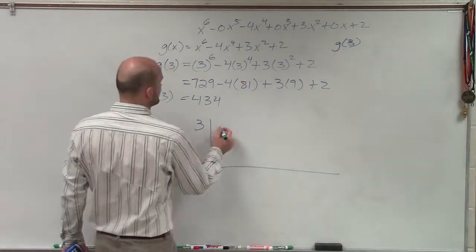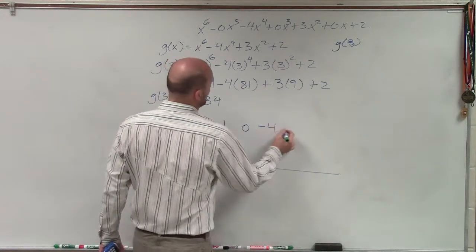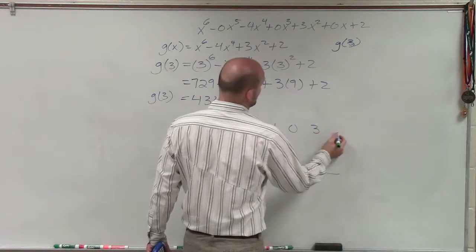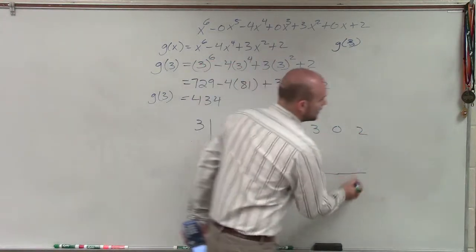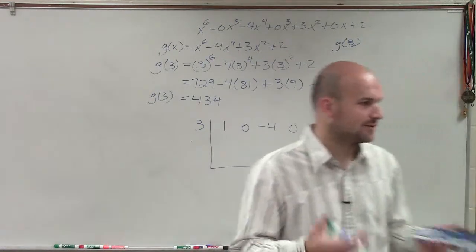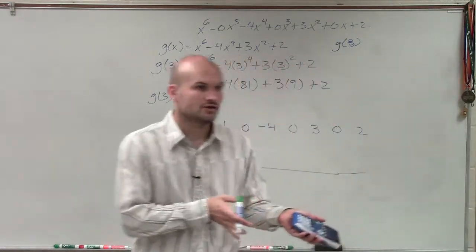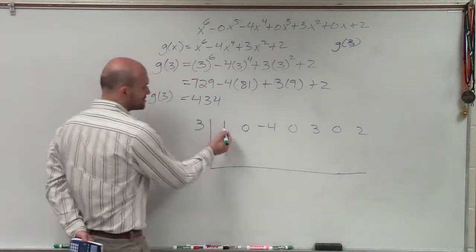So I apply synthetic division by taking my coefficient. So I have 1, 0, negative 4, 0, 3, 0, 2. And this is how we use two different methods. We apply the remainder theorem, which is plugging in your suspected zero into your function to determine what the remainder is, and then also using synthetic division.